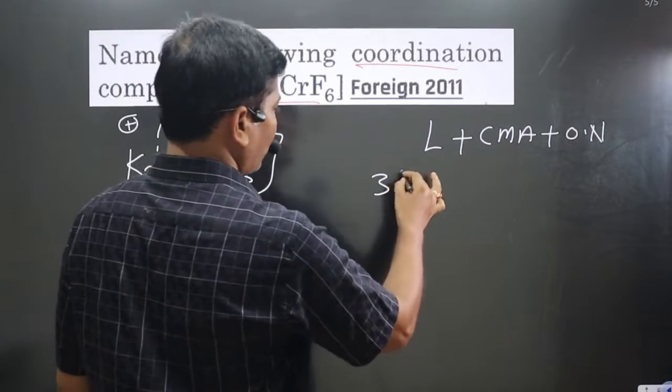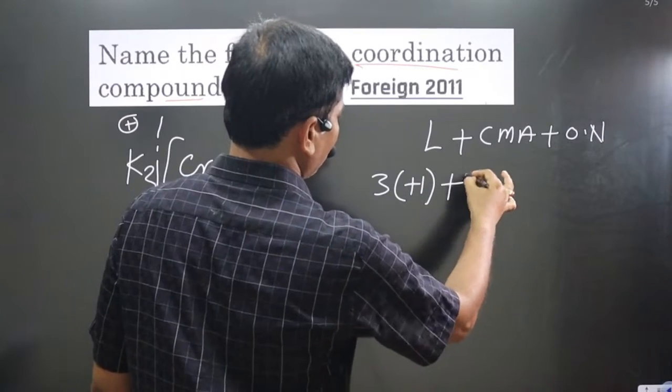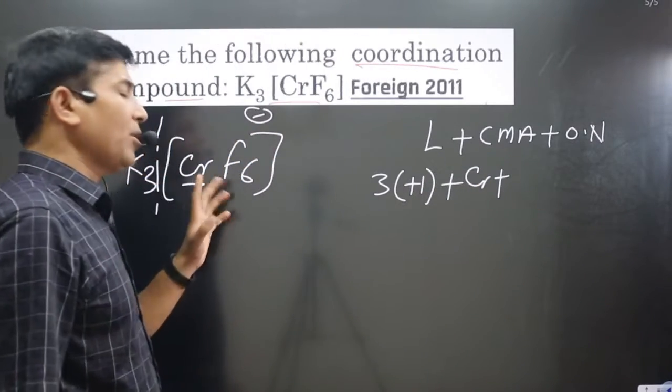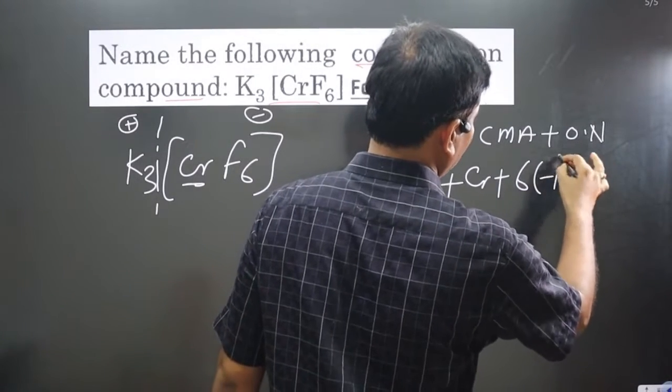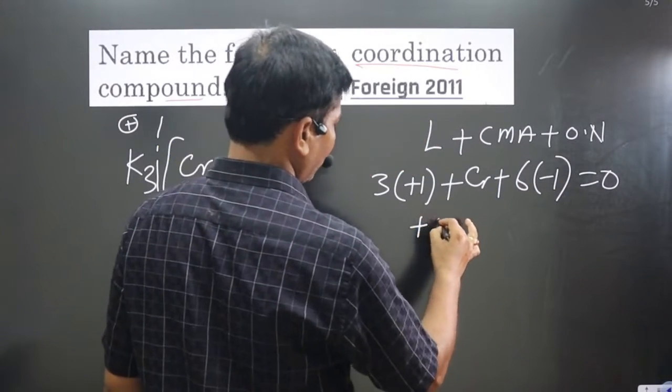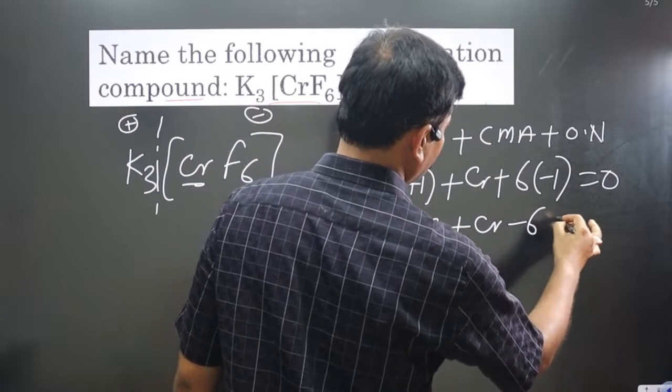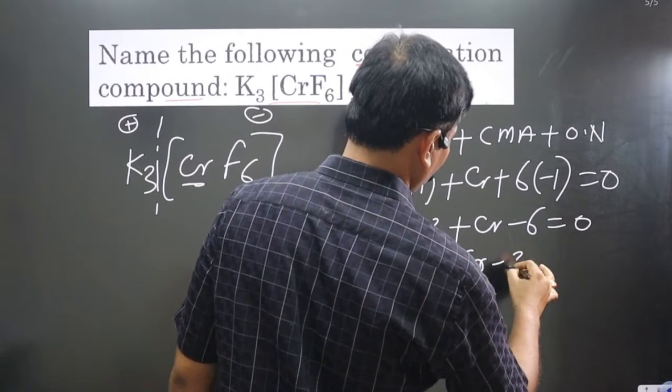Potassium, a first group element, always shows plus one oxidation number. We have three potassium at plus one, then Cr, plus six fluoride at minus one equals zero. Simplifying: 3(+1) + Cr + 6(-1) = 0, so +3 + Cr - 6 = 0, Cr - 3 = 0. Chromium is present in plus three oxidation state.